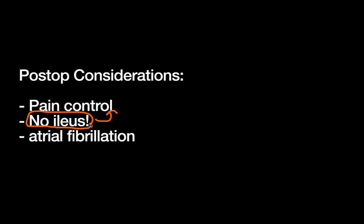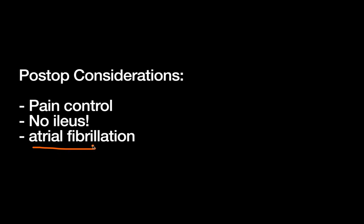Unlike ileus keeping general surgery patients in the hospital, the limiting factors for thoracic patients are usually pain control and chest tube management — particularly if there's a prolonged air leak keeping the tubes in. One final consideration: many of these patients get transient atrial fibrillation. When you're manipulating the lung, you're also manipulating the pulmonary vasculature, which is directly attached to the heart where AFib originates. This is often transient and may be managed somewhat differently by thoracic surgeons compared to general surgeons.